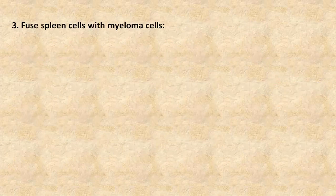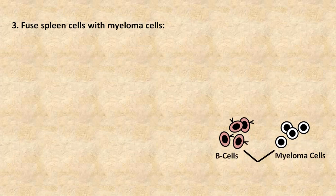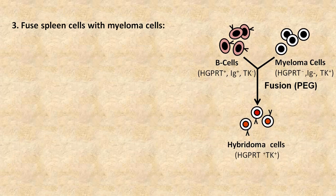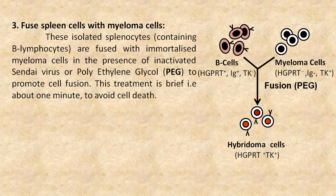The third step is to fuse spleen cells with myeloma cells. The isolated splenocytes are fused with immortalized myeloma cells in the presence of inactivated Sendai virus or polyethylene glycol to promote cell fusion. This treatment is brief, about 1 minute, to avoid cell death.